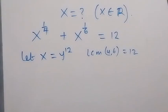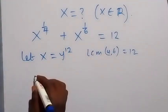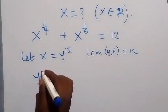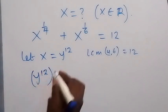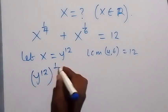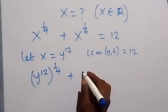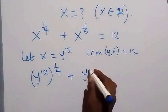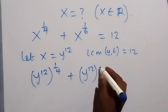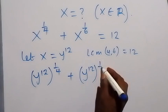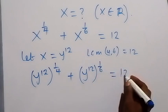From here, we can write: y raised to the power of 12, then raised to the power of 1 over 4, plus y raised to the power of 12, then raised to the power of 1 over 6, which equals 12.